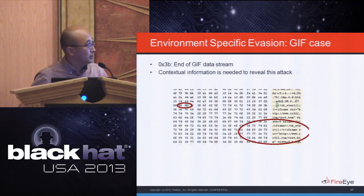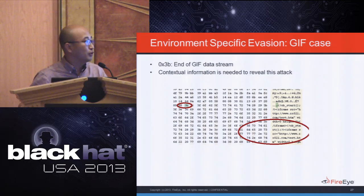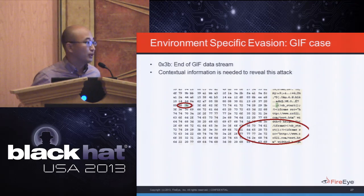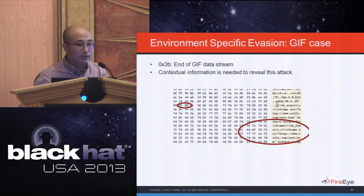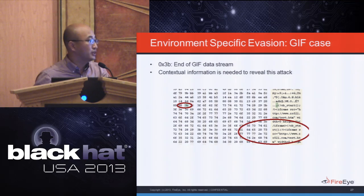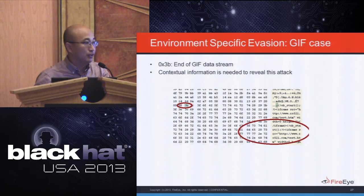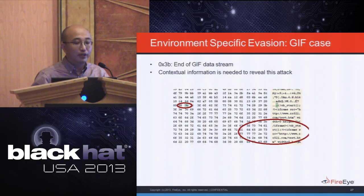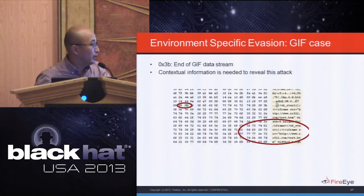A similar case involves a GIF file. A GIF has a header, content, metadata, and a footer. The byte 0x3B marks the end of a GIF data stream. All content after that is considered a comment area — common applications like the Windows viewer won't load or execute this area. But if another piece of malware reads and executes code from that comment area, a file-based sandbox analyzing only the GIF file cannot interpret anything malicious.